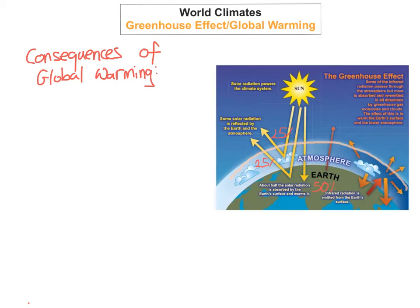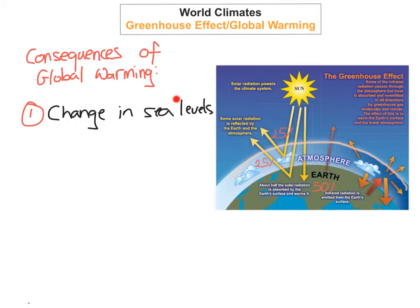So what we're going to look at now is some of the consequences of global warming. The first one is the change in sea levels. Polar ice caps are actually melting and therefore causing sea levels to increase. It's expected that sea levels will increase by 1.5 meters between now and 2050. If this happens, it will cause mass flooding in many countries, many coastal areas to be completely flooded, a lot of agricultural land to be flooded leading to crops and animals dying, and some places in the world being completely submerged.